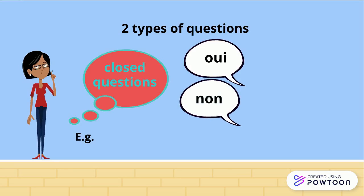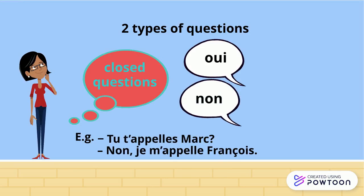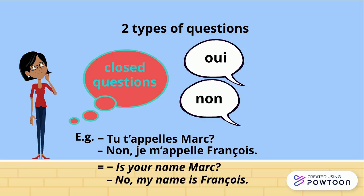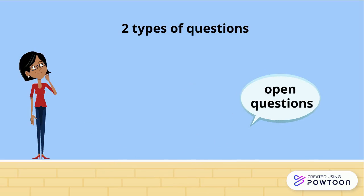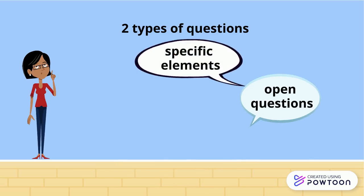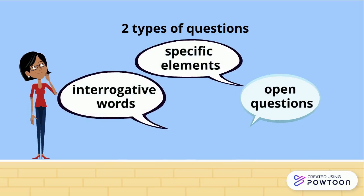For example: "tu t'appelles Marc?" — Non, je m'appelle François. Is your name Marc? No, my name is François.